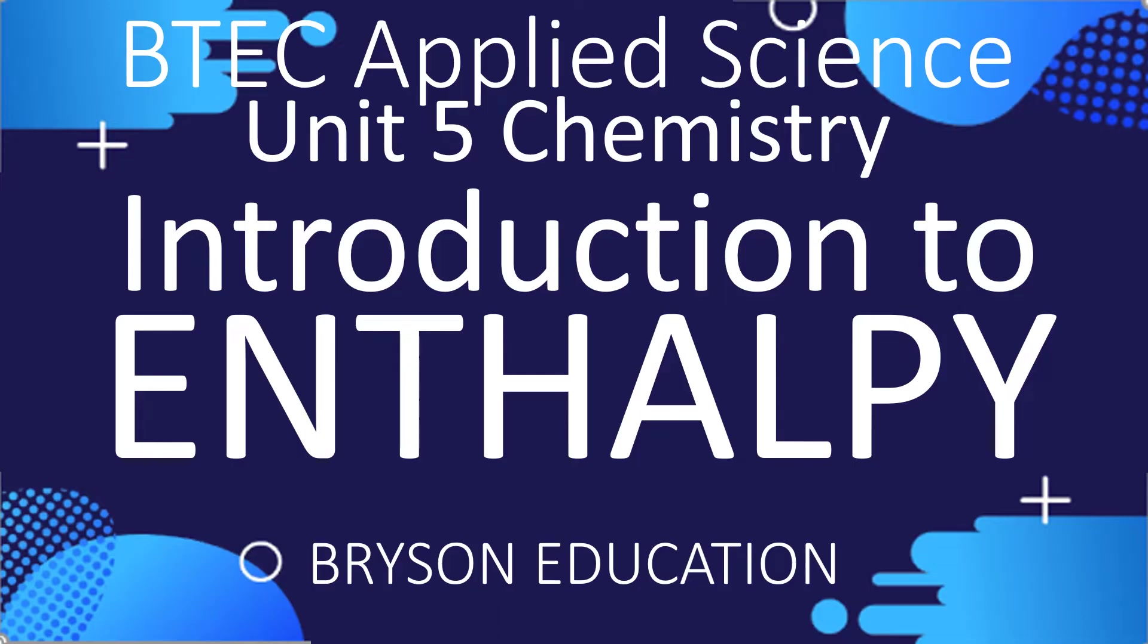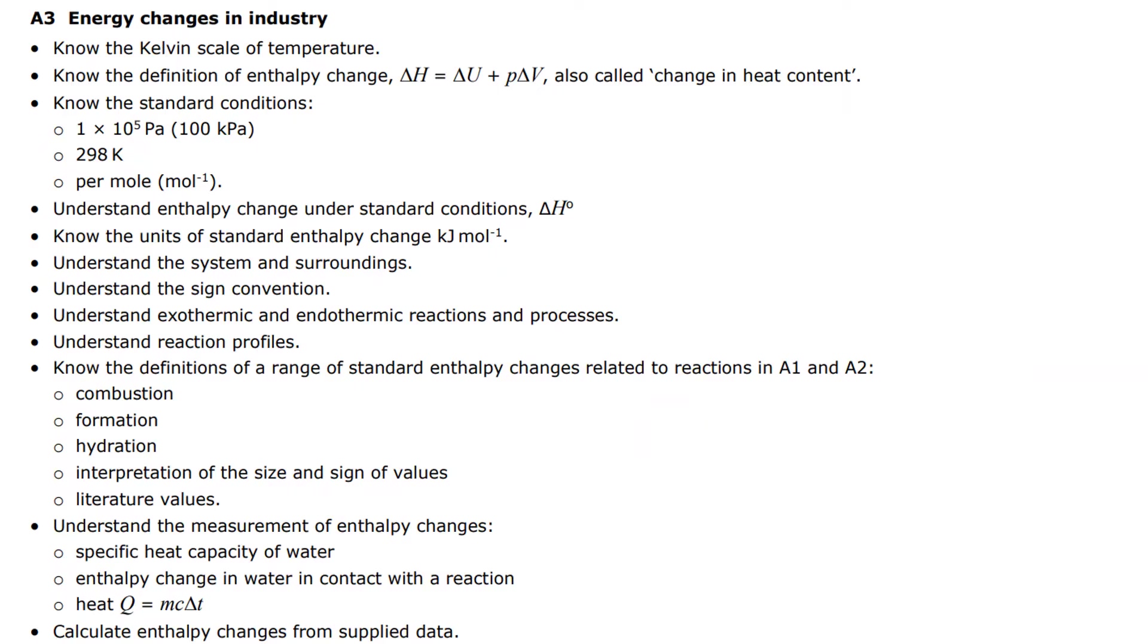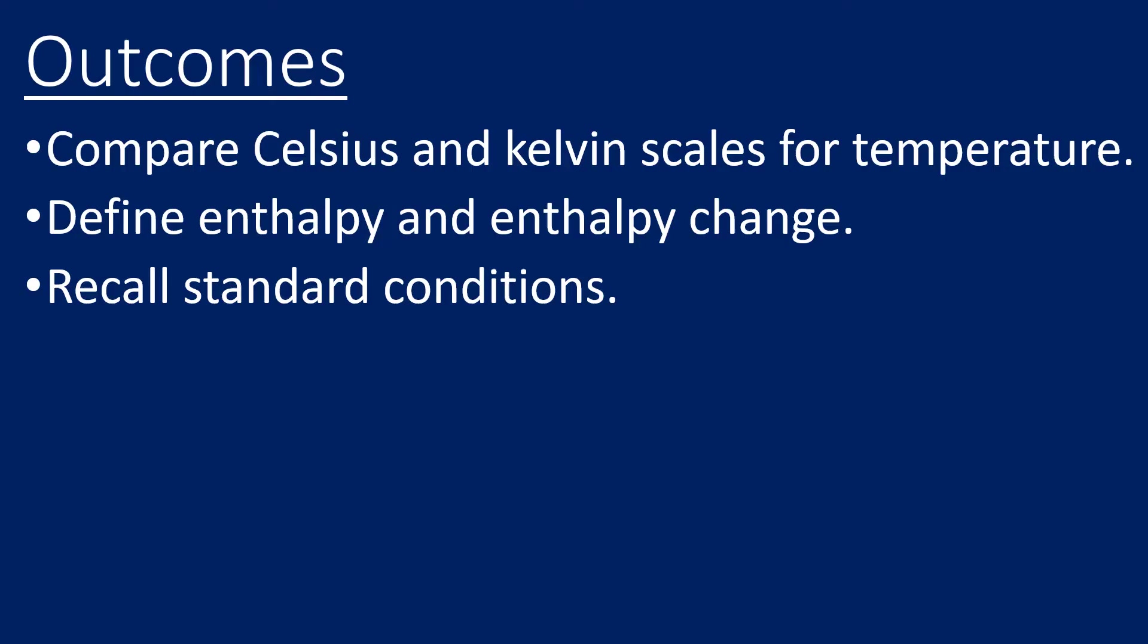Hello there, welcome to my channel on chemistry lessons. This is BTEC Applied Science Unit 5 Chemistry, an introduction to enthalpy. In terms of the specification, this is learning aim a3, and this video is going to cover those first five bullet points. Our outcomes for this are to compare the degree Celsius and the Kelvin scales.